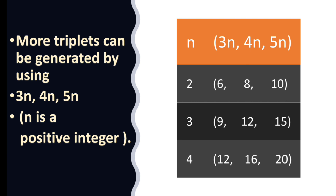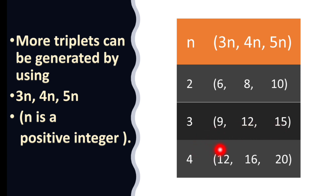Using 3n, 4n, 5n: when n = 2, we get 6, 8, and 10. When n = 3, we get 9, 12, and 15. When n = 4, we get 12, 16, and 20. In this way we can form many Pythagorean triplets.